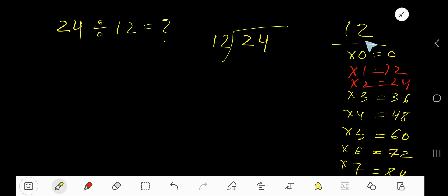Now 12 goes into 2 how many times? 0 times, as our current dividend 2 is less than 12. 0 times 12 equals 0. Subtract, you get 2. Bring down this 4.